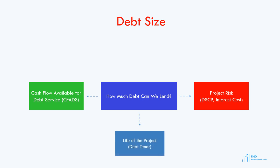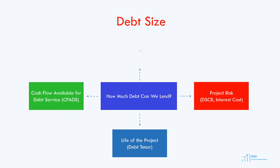Project economic life determines the debt size. The longer the project life, the longer the debt tenor will be, and a longer debt tenor means a larger debt size. Finally, the debt repayment profile also affects the debt size. A sculpted debt repayment profile, which is usually used in project finance transactions, results in a larger debt size compared to the level or annuity debt repayment profile.